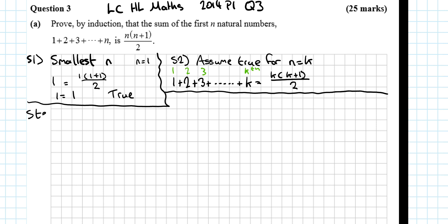Step 3, prove true for n is equal to k plus 1. So that's 1 plus 2 plus 3 plus dot dot dot, I'm going to leave a gap, plus k plus 1, is equal to anywhere up here now, where there's an n, I'm subbing in a k plus 1. So k plus 1, and then here, you'll be subbing in k plus 1, and it'll be k plus 1 plus 1, which is k plus 2, all over 2.